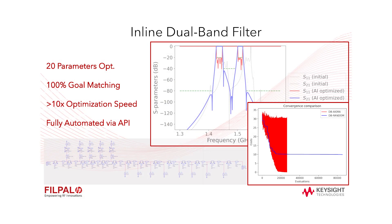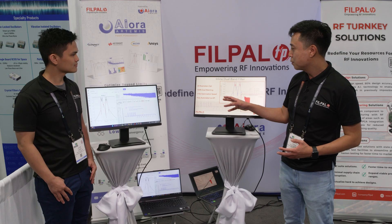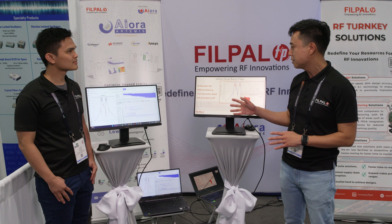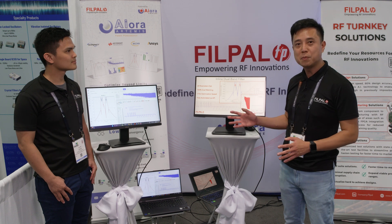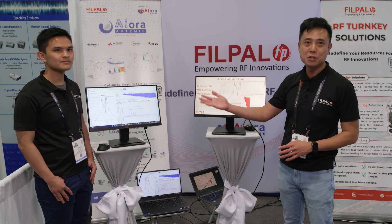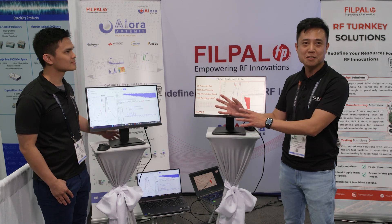We have an example design, which is an inline dual band filter. We constructed the schematic in ADS. There are 20 parameters to be optimized. It's fully automated, and I will let Alvin do a live demo about these automations.